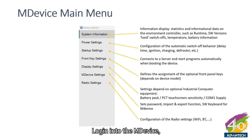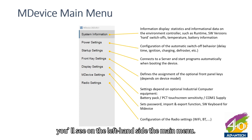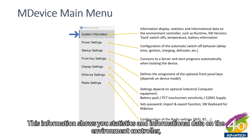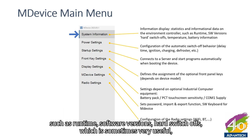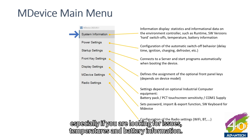After logging into M-Device, you see the main menu on the left-hand side. First is System Information, which shows statistics and informational data on the environment controller, such as runtime, software versions, hard switch-offs — which is very useful when looking for issues — temperatures, and battery information.